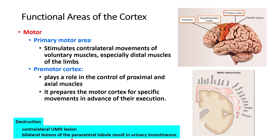A specific lesion worth mentioning is in the paracentral lobule. If you look medially, the paracentral lobule is in the area anterior to the central sulcus on the medial surface, and a lesion there will cause urinary incontinence.